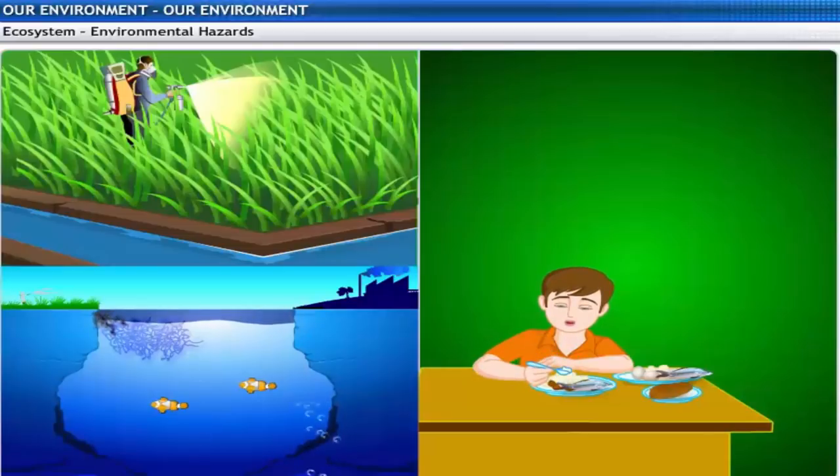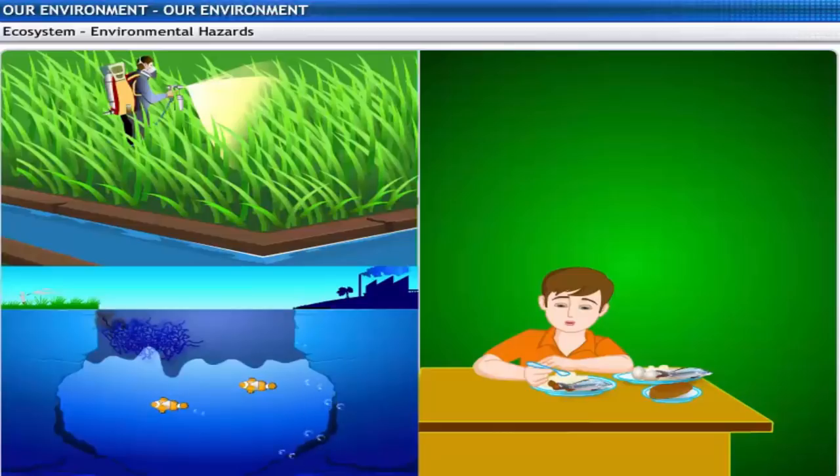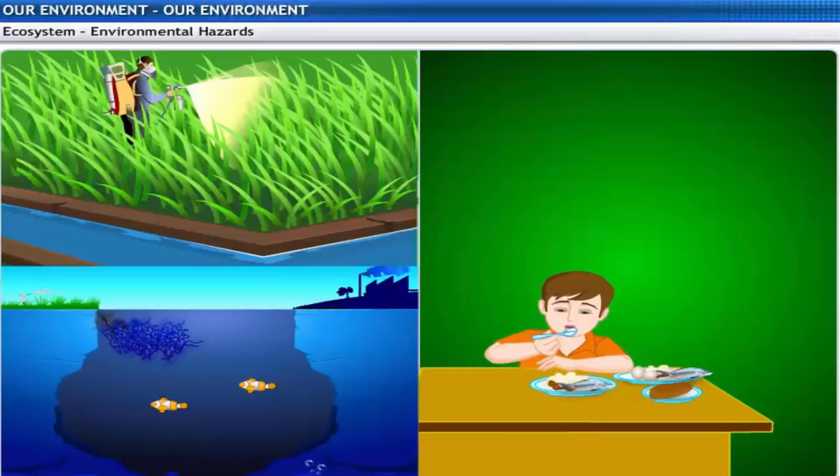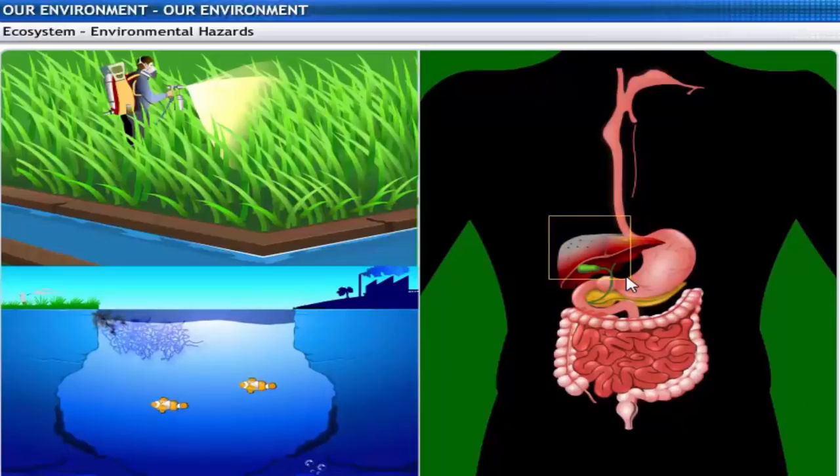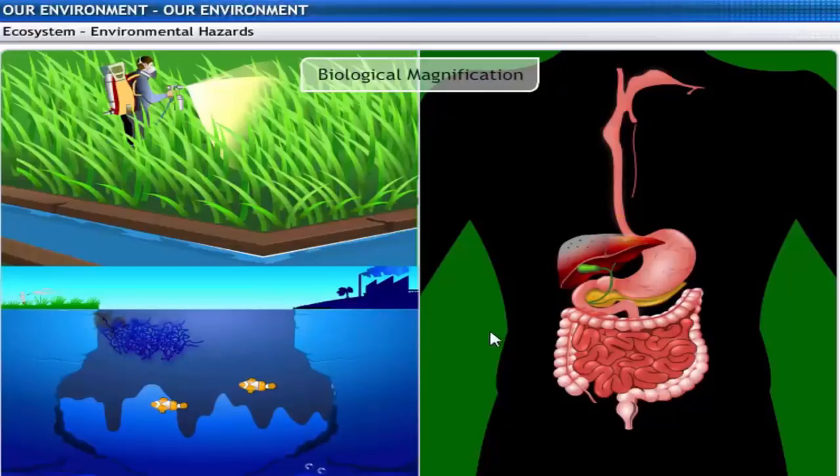As these chemicals are not degradable, these get accumulated progressively at each trophic level. As human beings occupy the top level in any food chain, the maximum concentration of these chemicals gets accumulated in your body. This phenomenon is known as biological magnification.